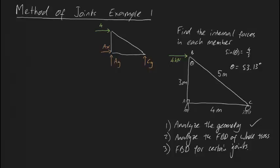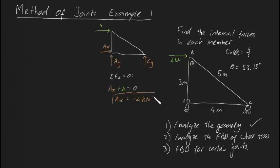We can now start analyzing this truss using the sum of forces equals zero — this truss isn't accelerating, which is the whole point of statics. Sum of forces in the x direction equals zero: there are only two forces in the x direction, AX and our four kilonewton force, so AX must be equal to minus four kilonewtons. You can tell that when I drew AX to the right, it's actually four kilonewtons to the left, which makes intuitive sense.